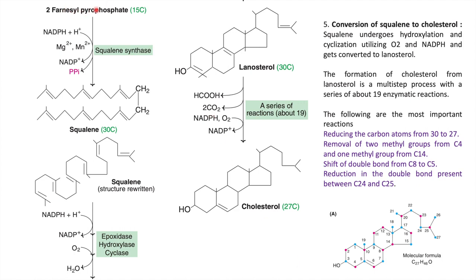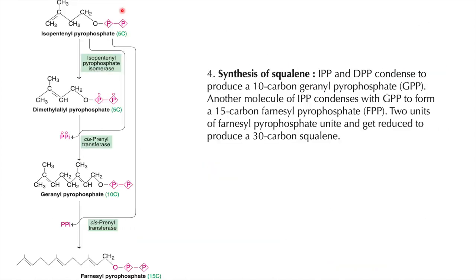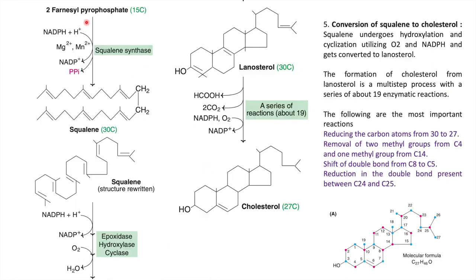From farnesyl pyrophosphate, which is the 15-carbon unit, cholesterol biosynthesis proceeds. When two units of farnesyl pyrophosphate join in a head-to-tail manner, you get squalene, the 30-carbon unit. This long-chain form is then converted into a half-semicyclic form, which is a rewritten structure of squalene.